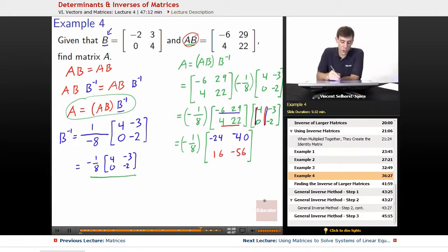So at this point, we can use our negative 1 eighth. We simplify this out. We get negative 1 eighth times negative 24 will become 24 divided by 8 is 3. Negatives cancel out, so we get positive 3. Negative 1 eighth times negative 40 becomes positive 5. Negative 1 eighth times 16 becomes negative 2. Negative 1 eighth times negative 56 becomes positive 7.